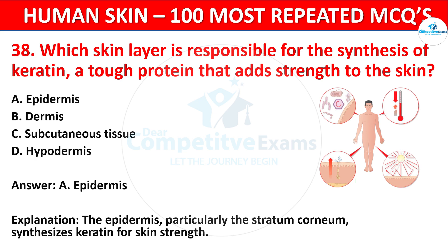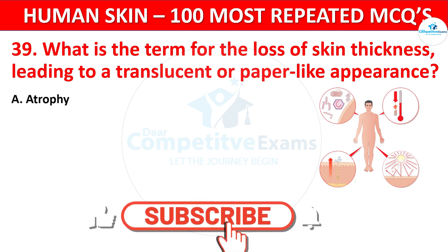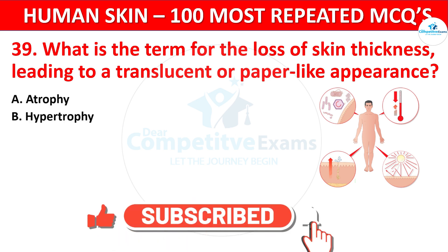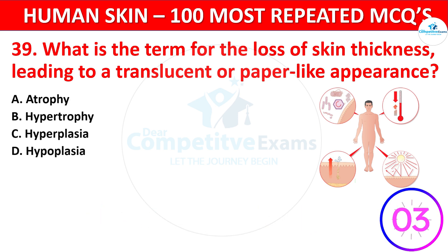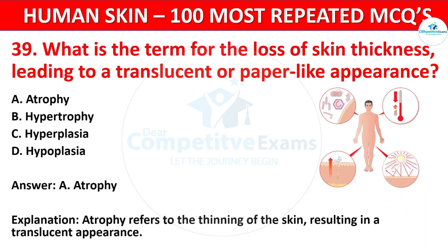Question 39. What is the term for the loss of skin thickness leading to a translucent or paper-like appearance? Your options: Atrophy, Hypertrophy, or Hypoplasia. The correct answer is Atrophy. Atrophy refers to the thinning of the skin, resulting in a translucent appearance.